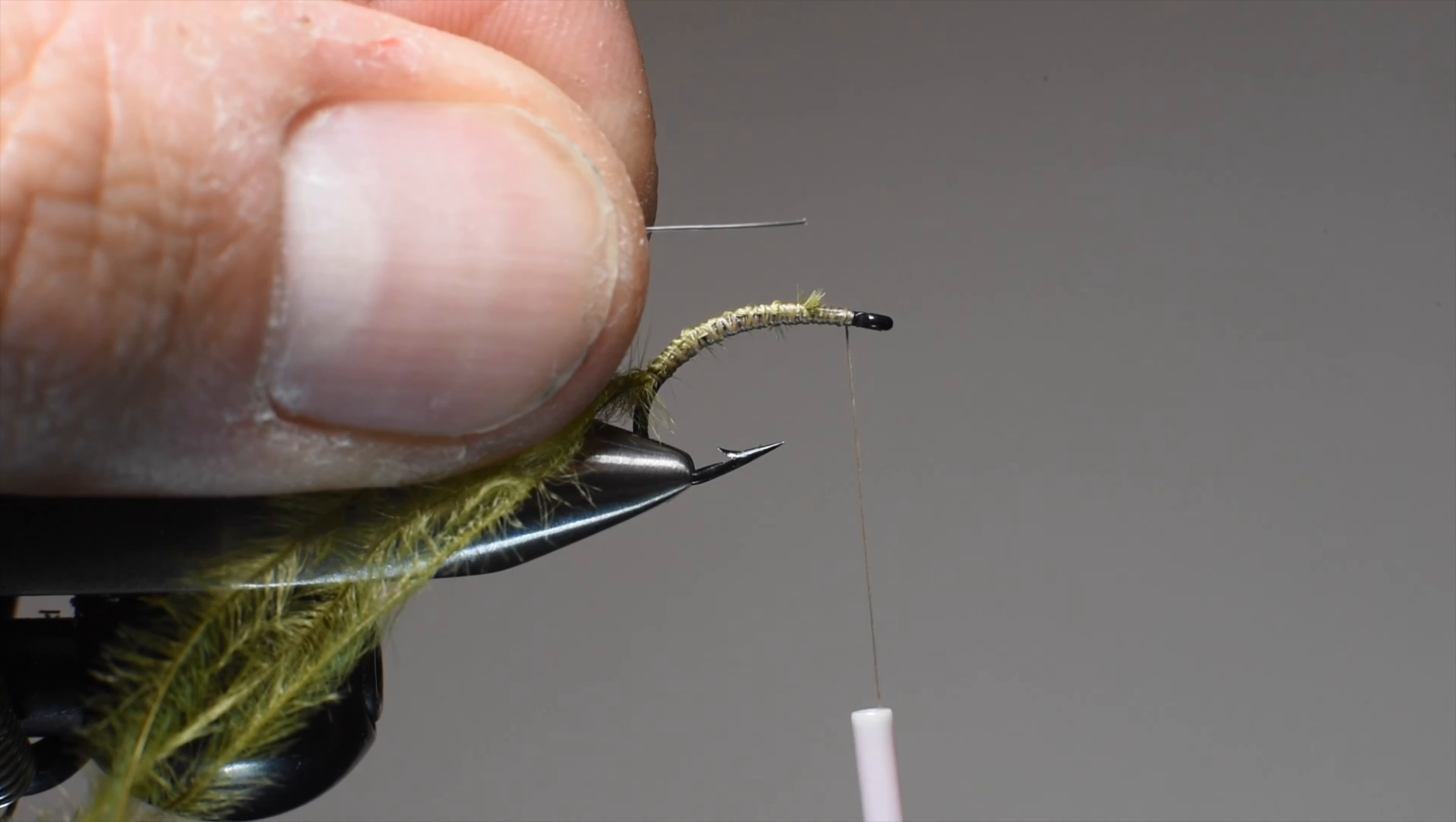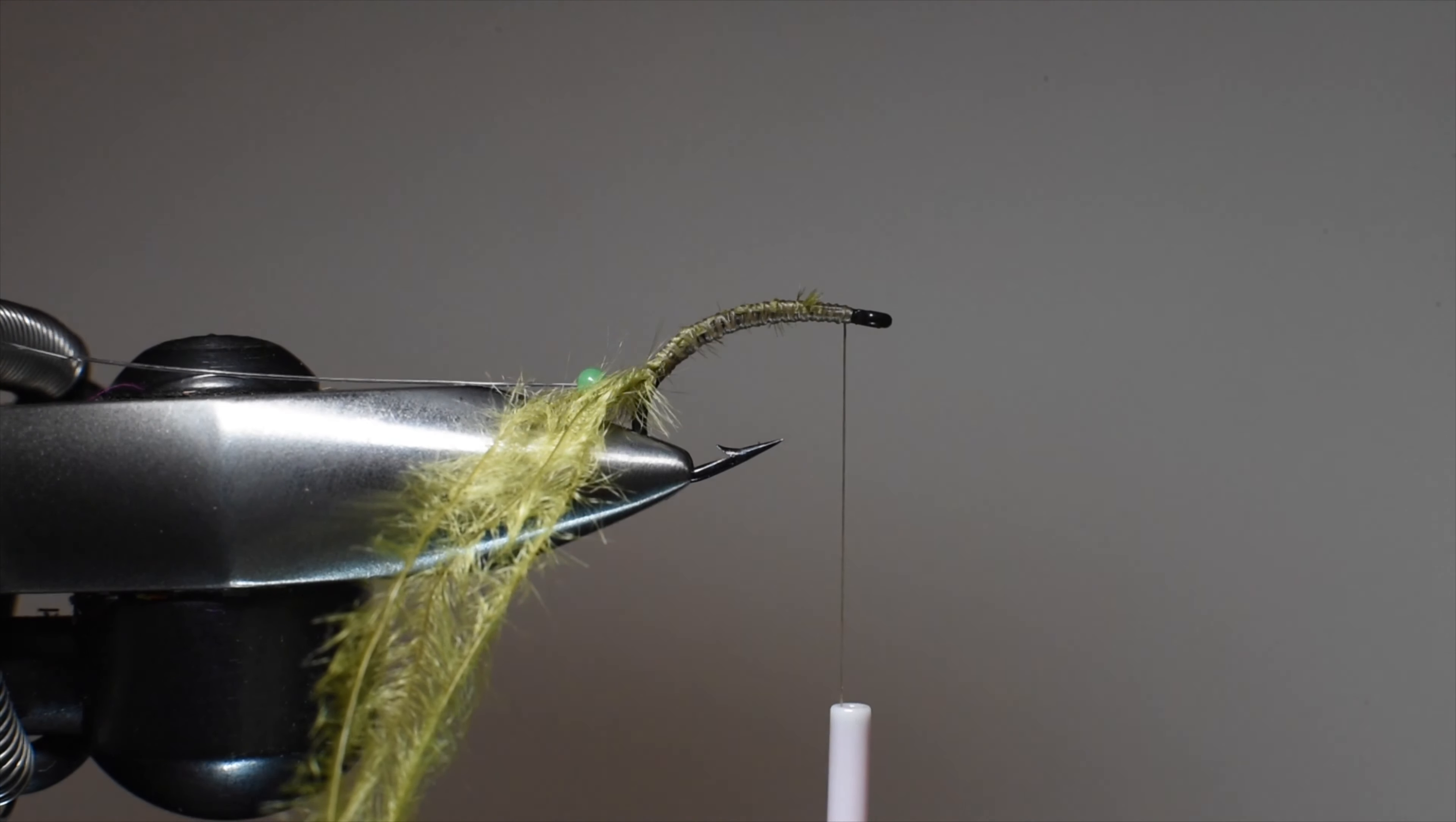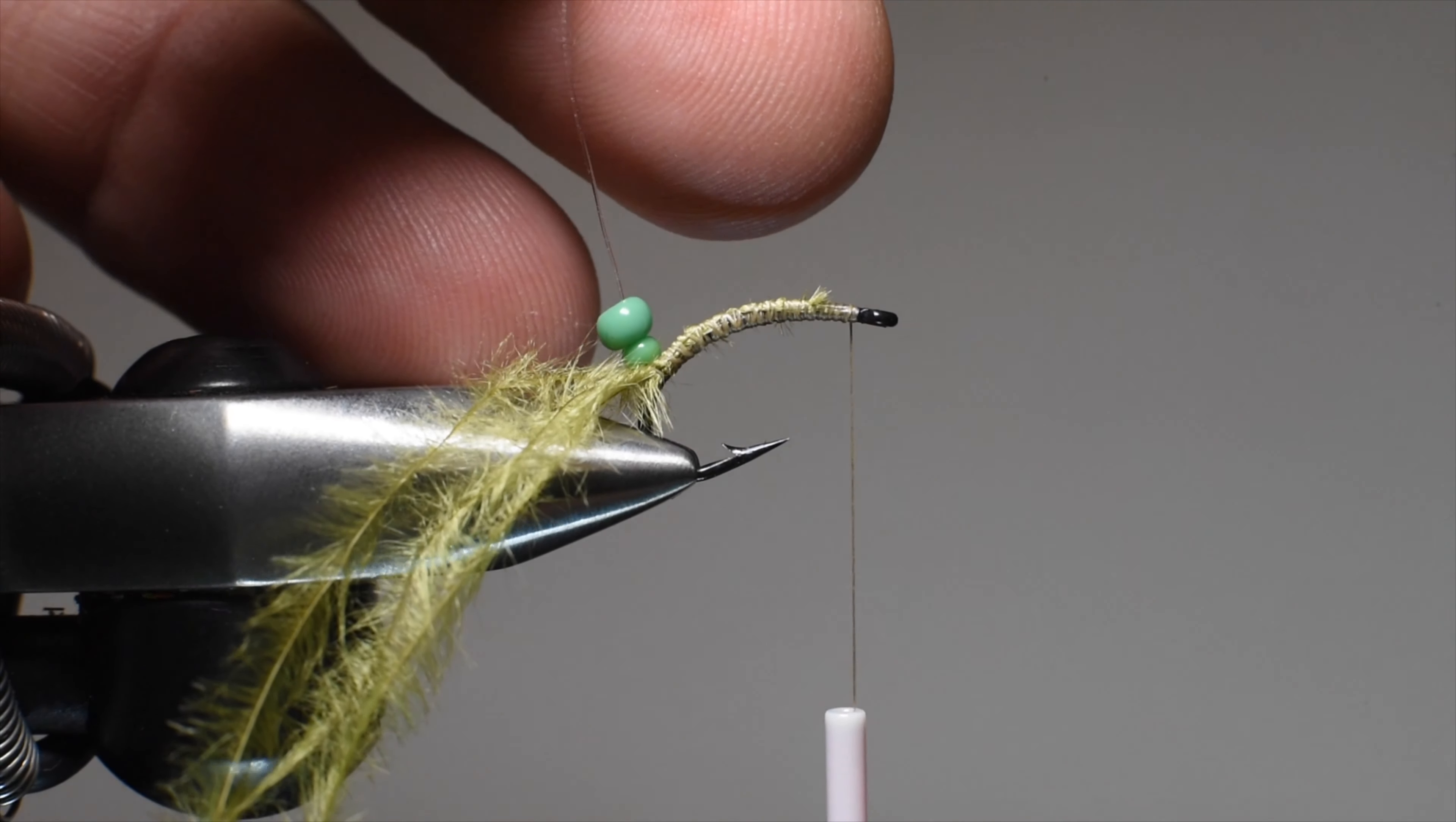This will drastically reduce the cost of the sow bug. I will be adding one tungsten bead, so I'm going to still taper it with some smaller beads. This is an 11/0 Czech glass bead. I'm going to put the smallest one on first.